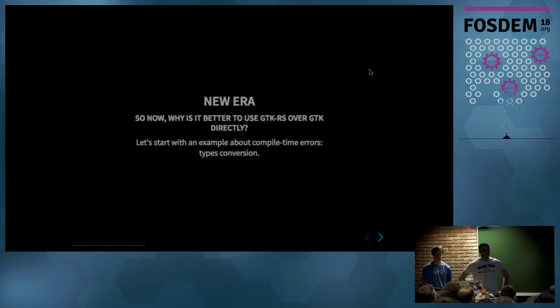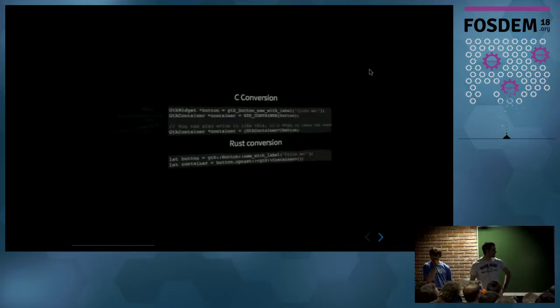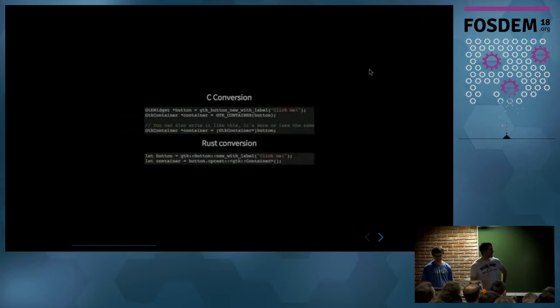So now, why is it better to use GTK-RS over GTK directly? For a few things, so let's start with compile errors type conversions. So in C, you can totally do that, it's not a problem, not much checks. In Rust, you will do it by using the upcast method. The big difference being, at this point, it's just in Rust, we have checks done at compile time.